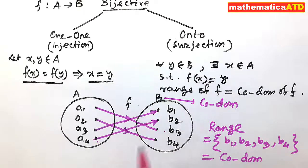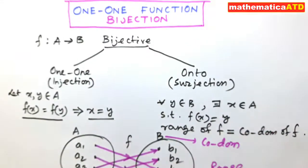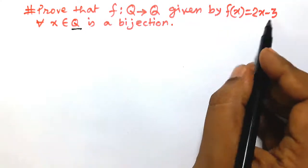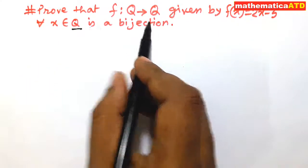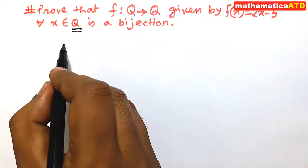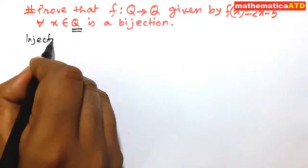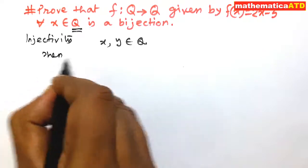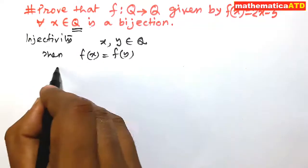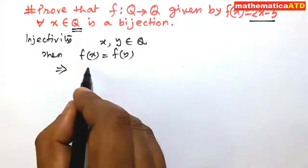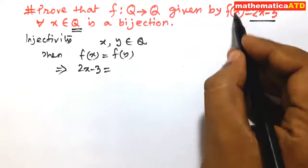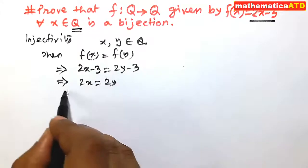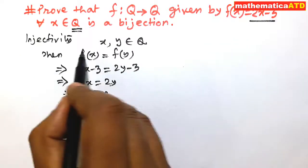Now we shall see an example. Prove that f from Q to Q given by f(x) = 2x − 3 for all x belonging to Q is a bijection, where Q is the set of rational numbers. We start with injectivity. Let x and y be two elements of Q. Then f(x) = f(y) implies 2x − 3 = 2y − 3, which implies 2x = 2y, therefore x = y.